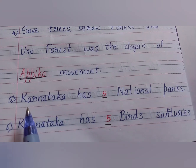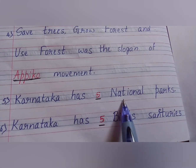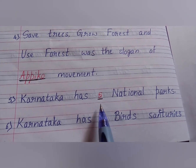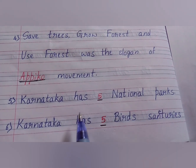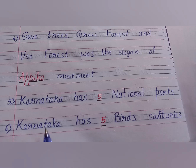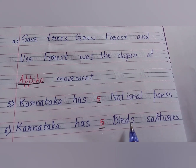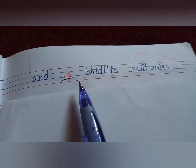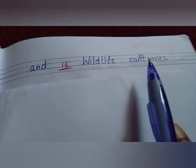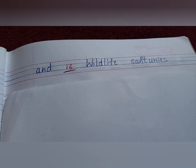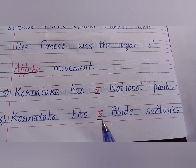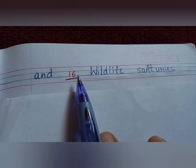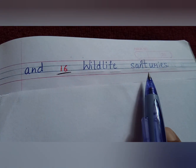Fifth question: Karnataka has dash national parks. How many, children? Yes, it is five national parks. Sixth one: Karnataka has dash bird sanctuaries and dash wildlife sanctuaries. The answer is five bird sanctuaries and 16 wildlife sanctuaries.